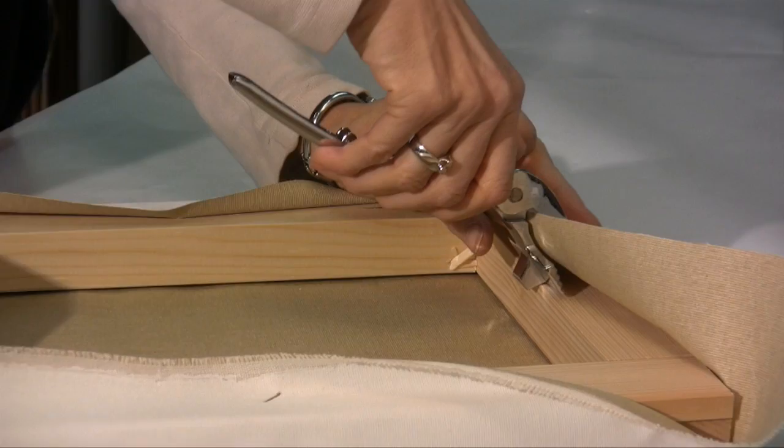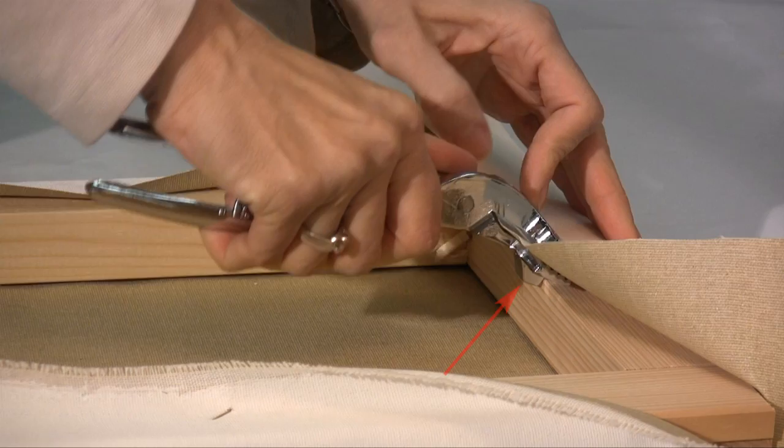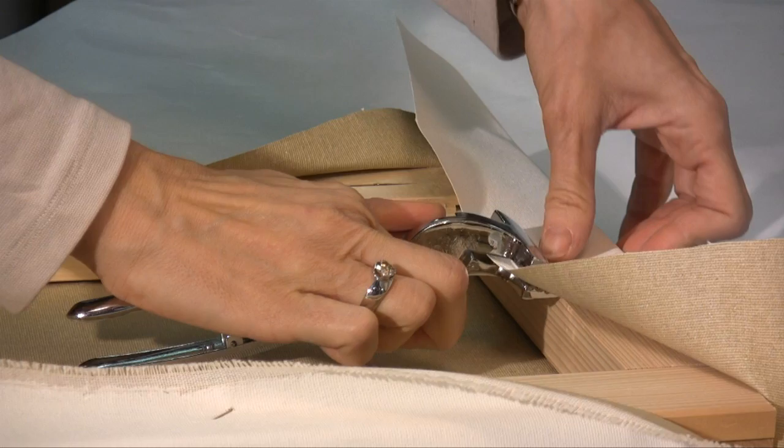I now show you what the prominence which is found under the stretcher pliers is for. The prominence is needed as a lever support, in cases where the outline of the frame allows it, as we see here.